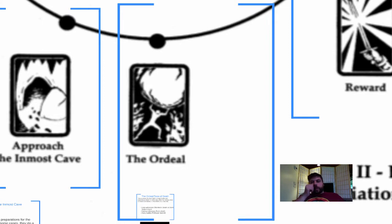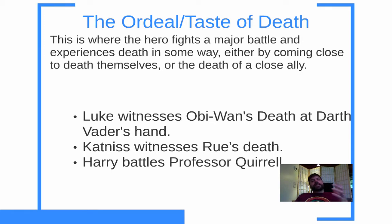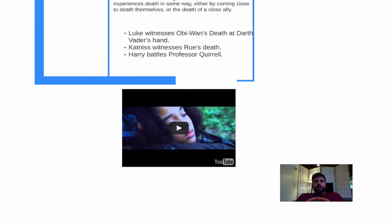The next step is the Ordeal itself — the major, major battle of the cycle. The hero often experiences death in some way: they either come close to death themselves or witness the death of a close ally. Luke witnesses Obi-Wan Kenobi's death at Vader's hand — spoiler if you haven't seen it. Katniss witnesses Rue's death. Harry battles Professor Quirrell. There's some kind of taste of death at this point. It's not necessarily the last battle of the journey, but it's definitely the big one. There's a quick YouTube clip of the death of Rue.